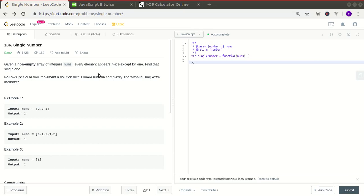Hi there. Let's solve single number. It reads, given a non-empty array of integers nums, every element appears twice except for one. Find that single one.